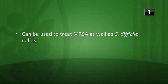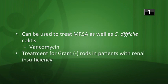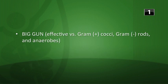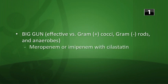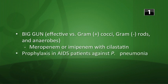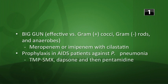Vancomycin can be used to treat MRSA as well as C. diff colitis. Treatment for gram-negative rods in patients with renal insufficiency is aztreonam. The big gun effective against gram-positive cocci, gram-negative rods, and anaerobes could be meropenem or the combination of imipenem with cilastatin. Prophylaxis in AIDS patients against Pneumocystis jirovecii pneumonia is trimethoprim-sulfamethoxazole, alternatively dapsone or pentamidine.